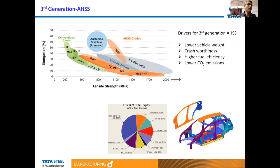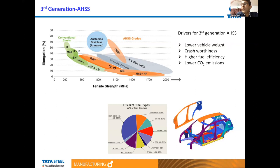The advent of third generation steels was driven by the need for steels with not only high strength but also reasonably good formability. The key drivers for high strength steels are lower vehicle weight, good fuel efficiency, crashworthiness — where high strength steels absorb impact energy protecting passengers — and lower CO2 emissions, since reduced vehicle weight leads to lower emissions.